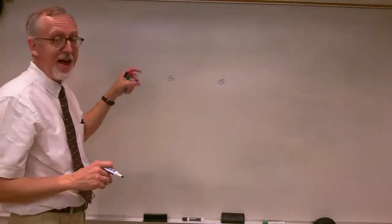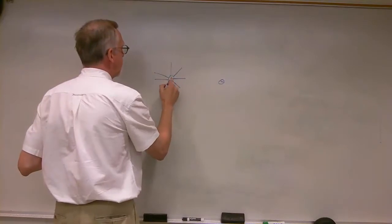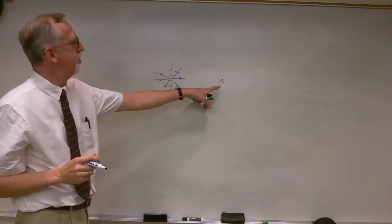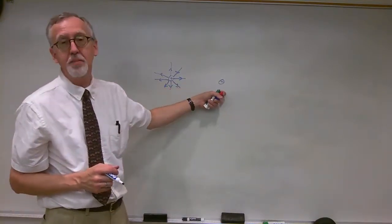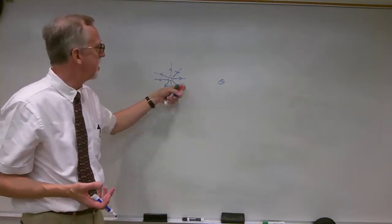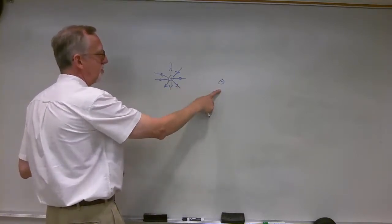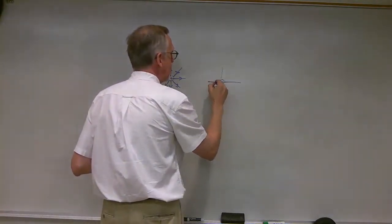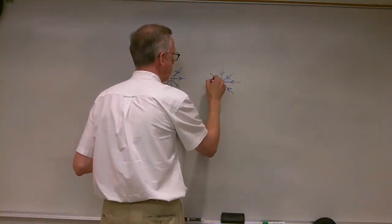We'll start with the lines coming out of the positive charge. Let's assume that the magnitude of these two charges are the same — this might be plus one Coulomb and minus one Coulomb, or plus one microcoulomb and minus one microcoulomb. The same magnitude means they must have the same number of lines. I've drawn this one with eight lines coming out, so I'm going to draw the negative one with eight lines going in.